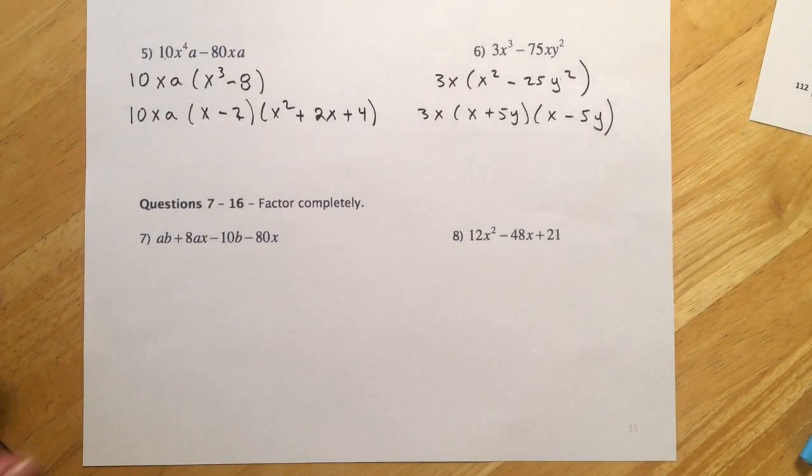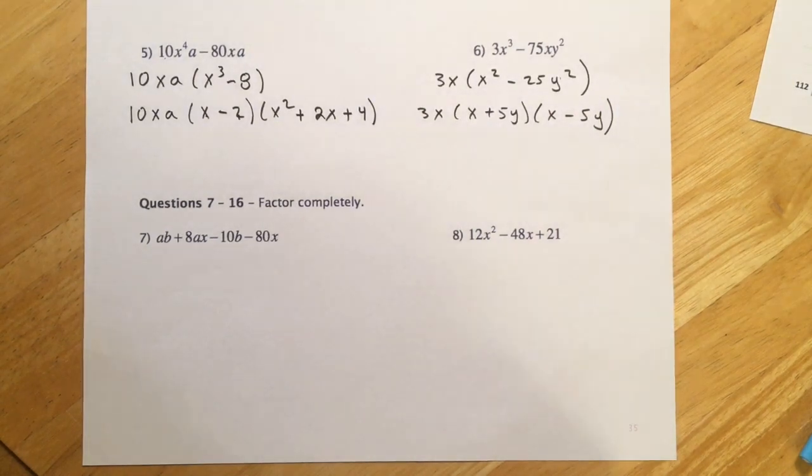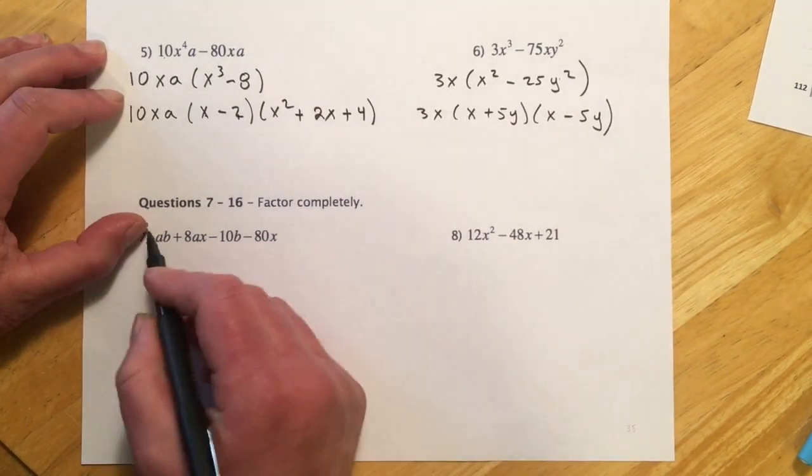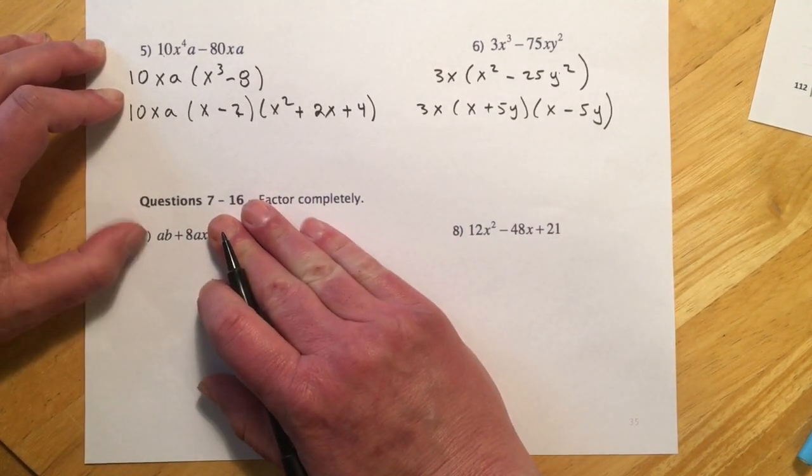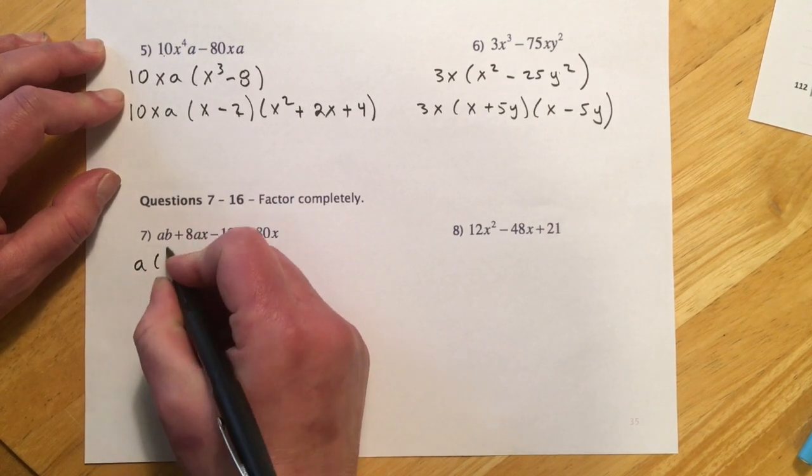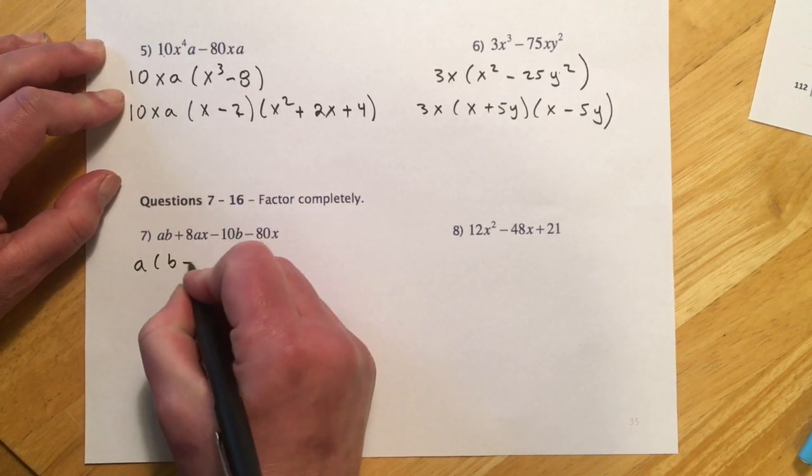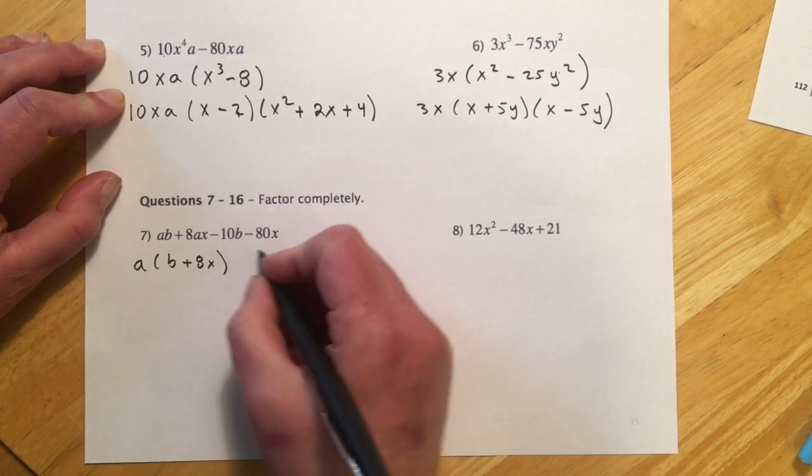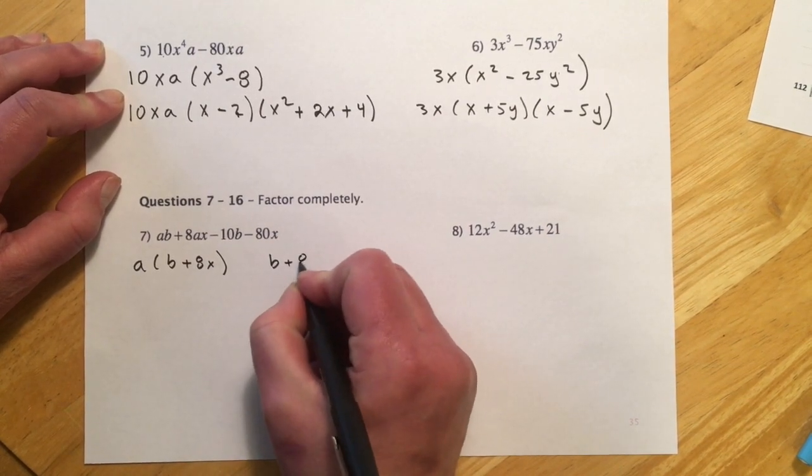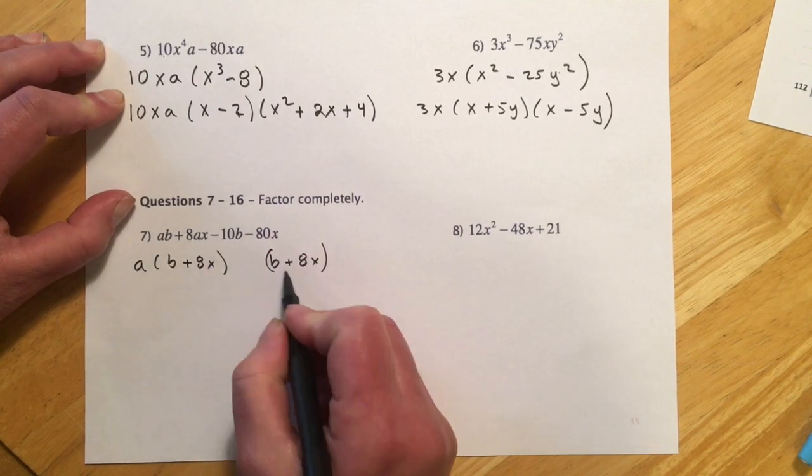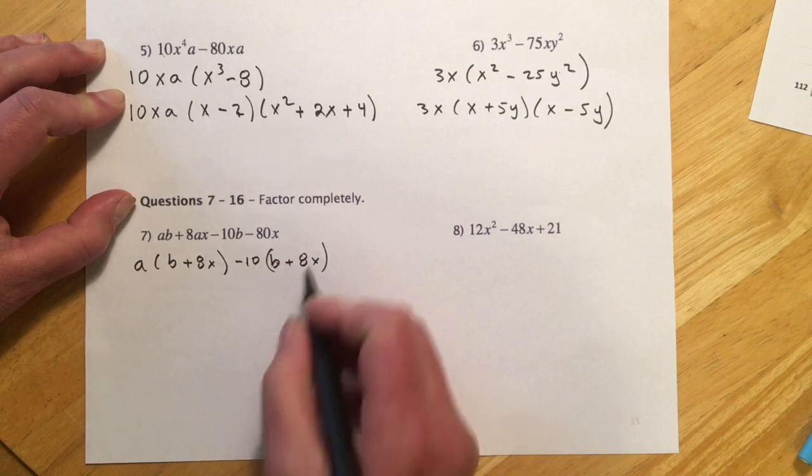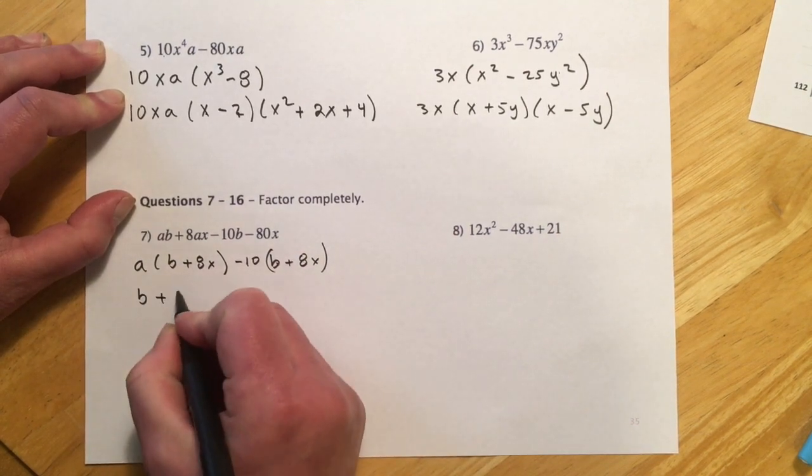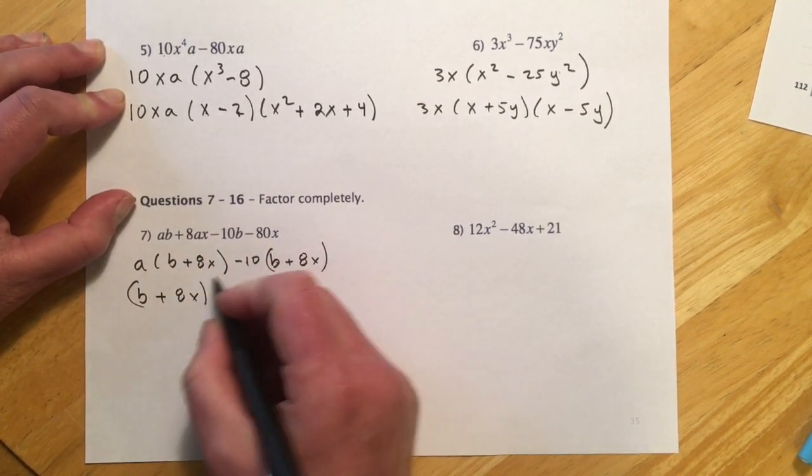I can find these next 8 or so, yeah, I think it's 8 of them, are the matched problems that I would have you guys try in class. So first one, no GCF. So 4 terms, got to be a grouping problem. I look at these two, and it looks like I could just do an A out of there. So I'm going to take an A out front, and that's going to leave a B plus 8X. So I got to get another B plus 8X. So write it down, and then make that happen. And writing that helps me see the negative 10 is the way to go, and that makes my signs come out on the rest. So this is going to be B plus 8X, leaving behind A minus 10.